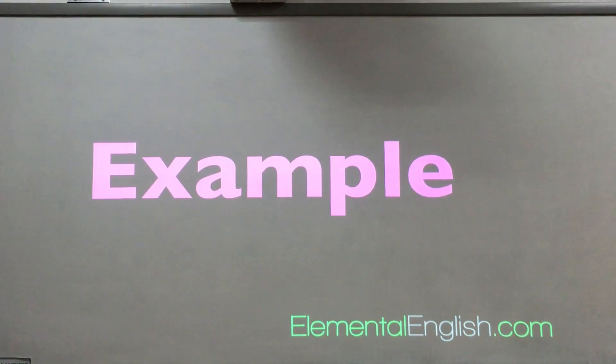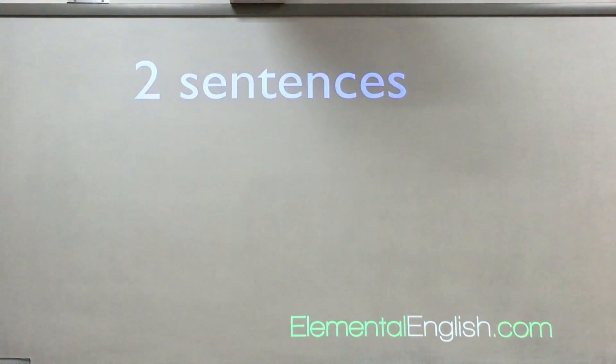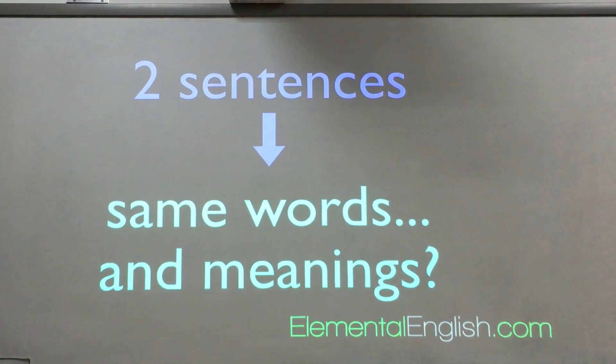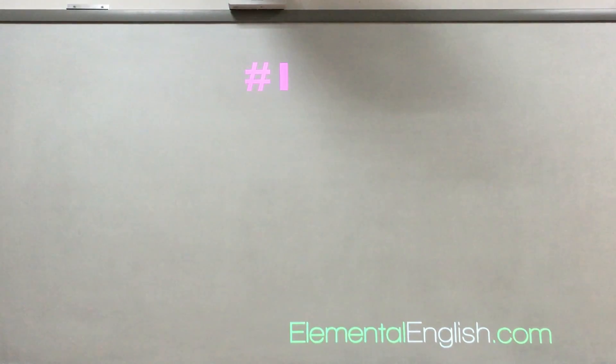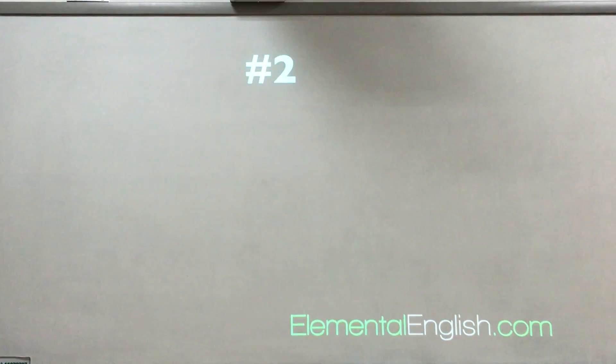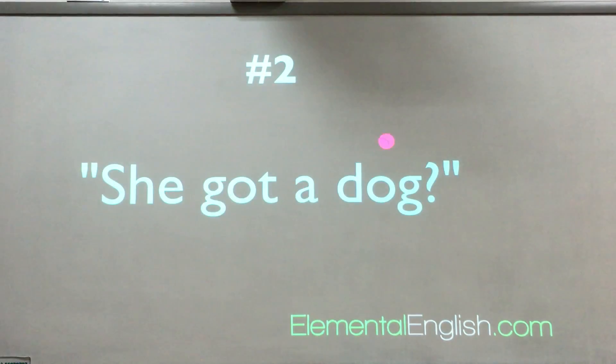For example, the following two sentences contain the same words, but is there a difference in meanings? Number one: 'She got a dog.' Number two: 'She got a dog?'